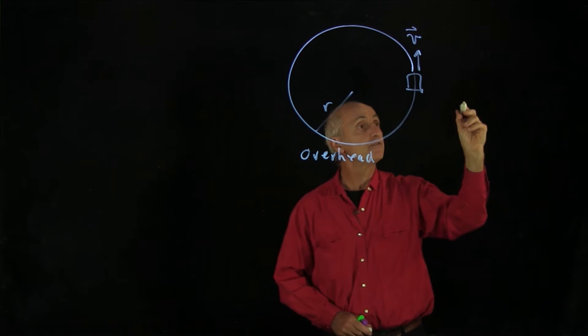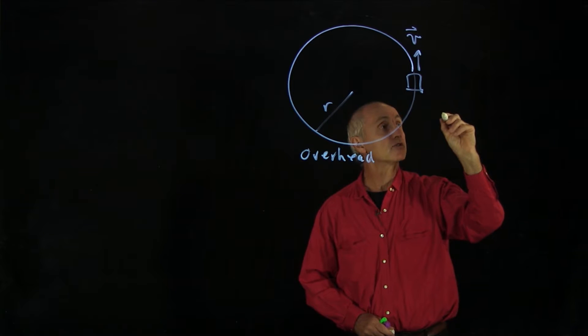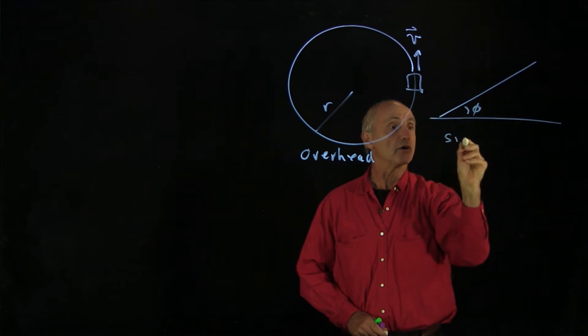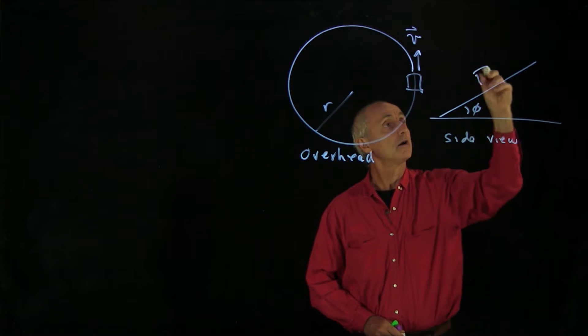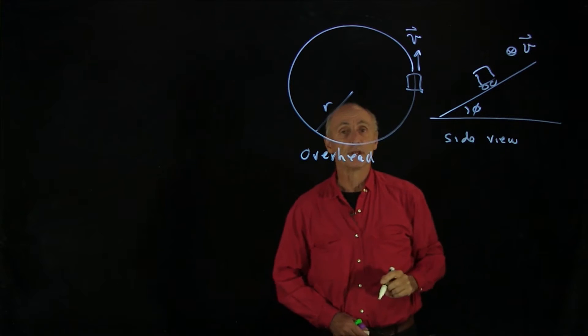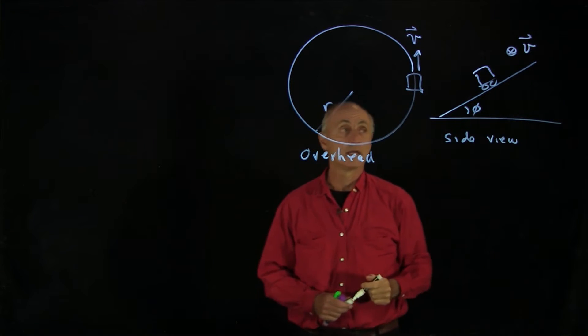Now, from the side view, when we want to look at that banked turn, let's draw a side view. So here's our side view, and the car is moving with the velocity into the plane of the figure.